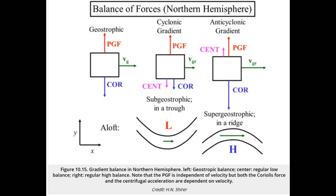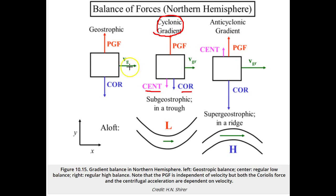For the cyclonic gradient — that is, curvature around the low pressure center — the PGF points to the low and is constant as long as the pressure gradient is constant. In this case, the PGF is opposed by both the Coriolis force, which depends on the velocity, and the centrifugal force, which depends on the velocity squared. Since the PGF is constant, the sum of the centrifugal and Coriolis forces must equal it, and since they both depend on velocity, the velocity must be less than in the geostrophic case in order for there to be a force balance. This velocity is called subgeostrophic because it is less than the geostrophic velocity.